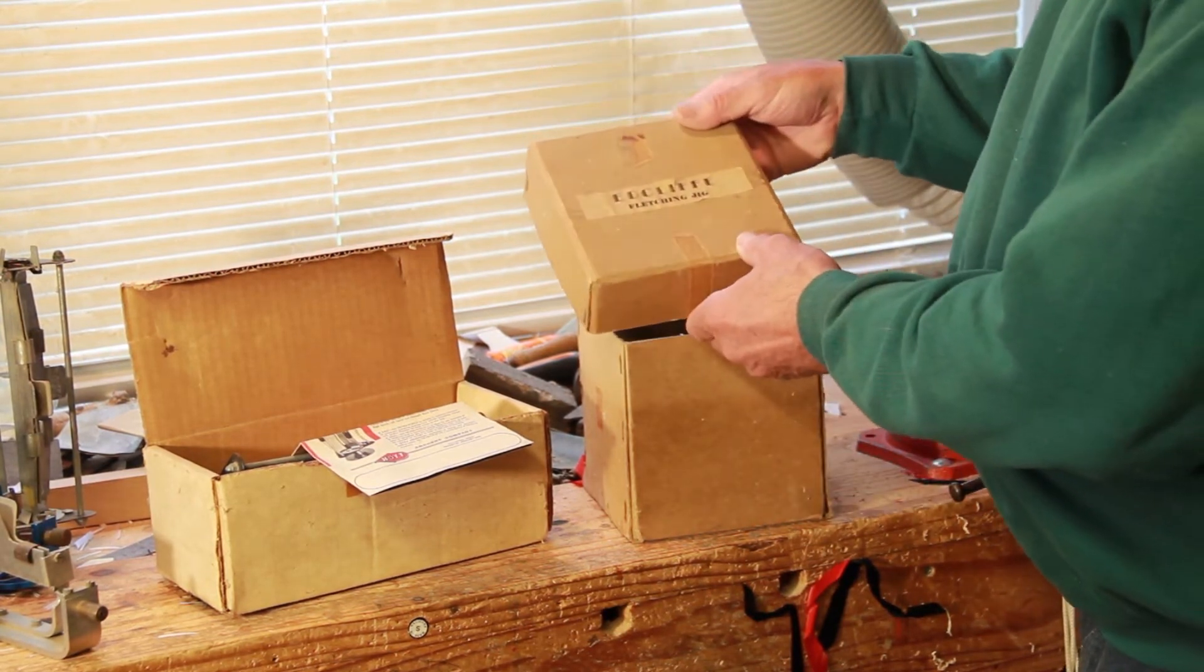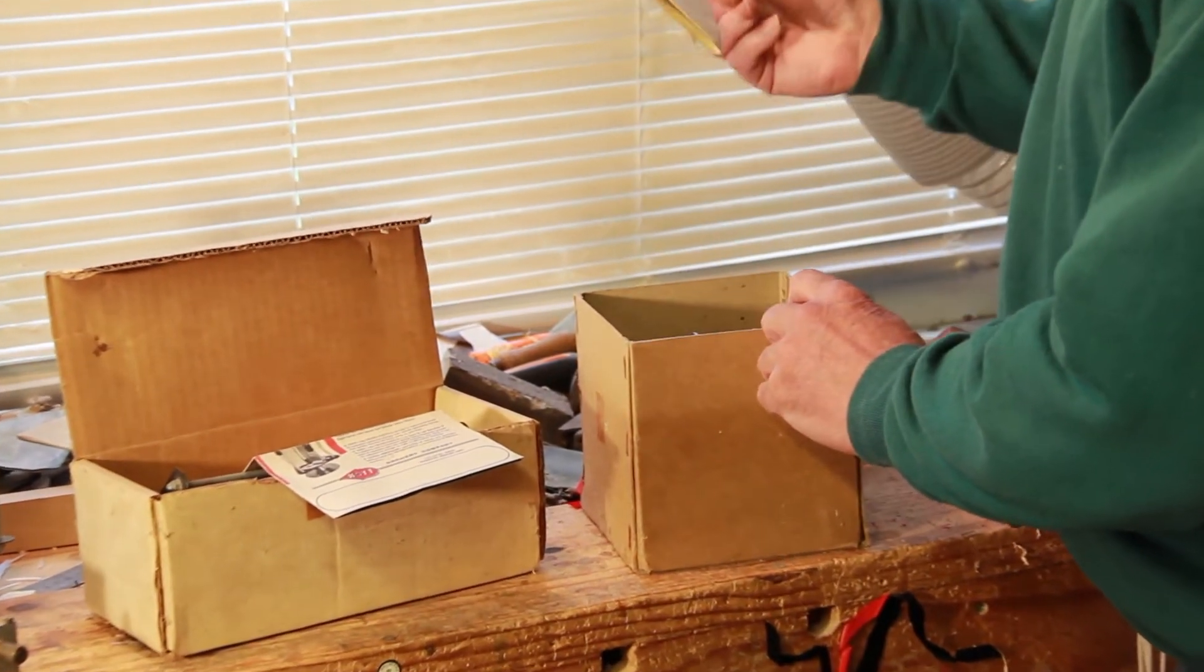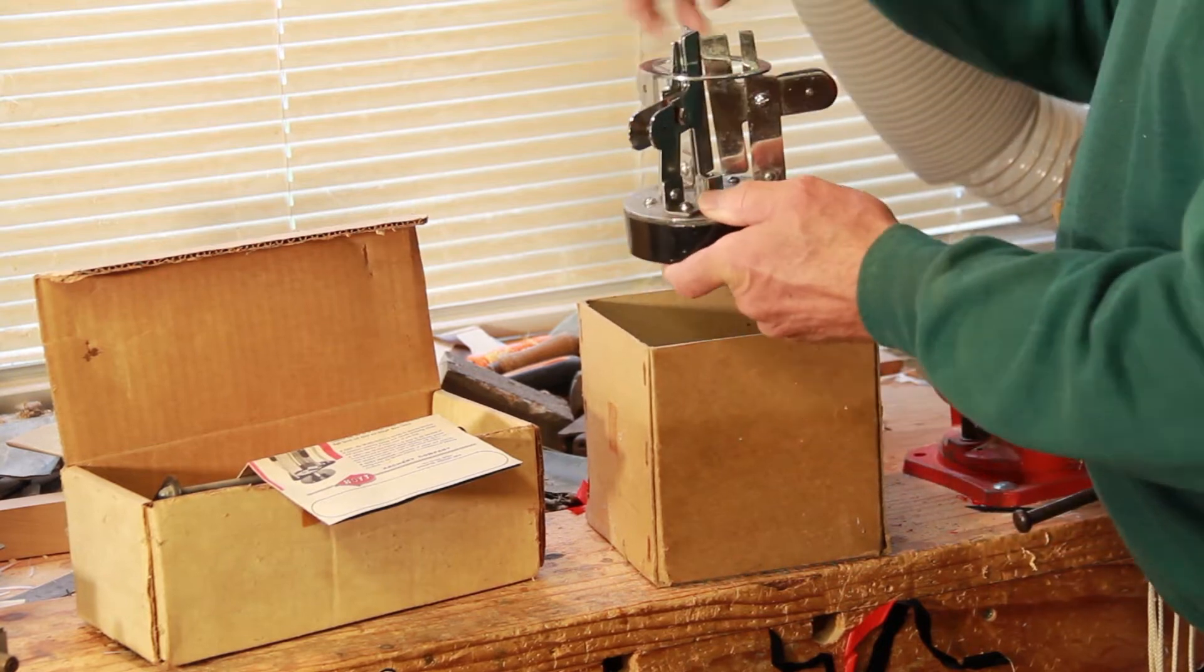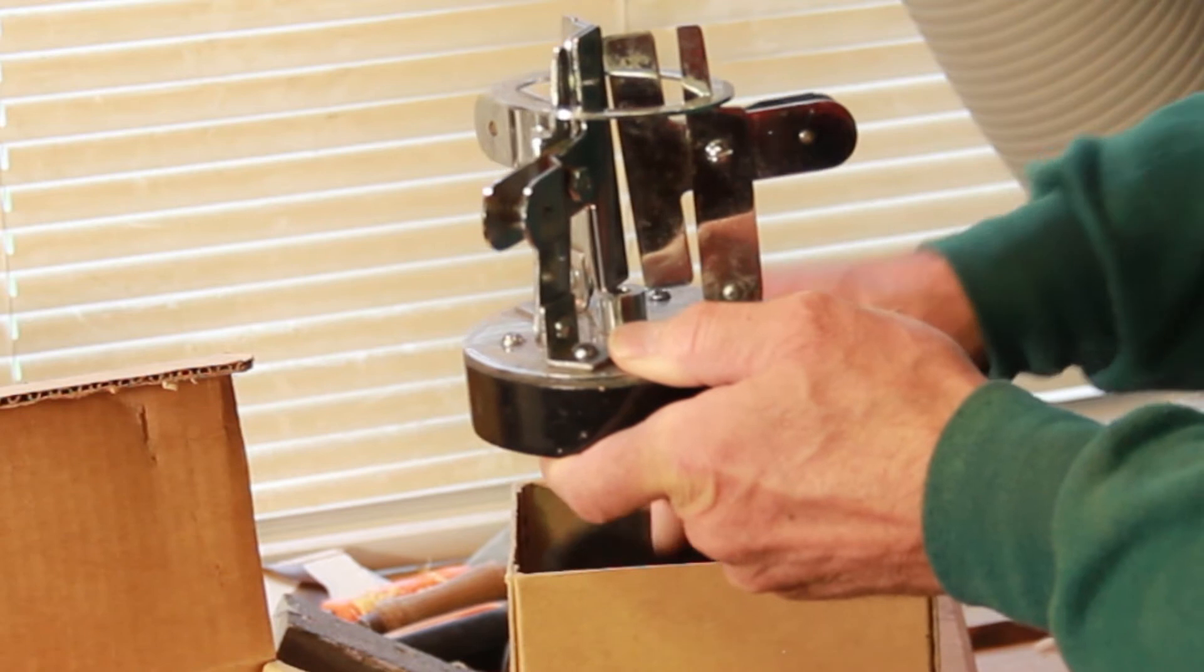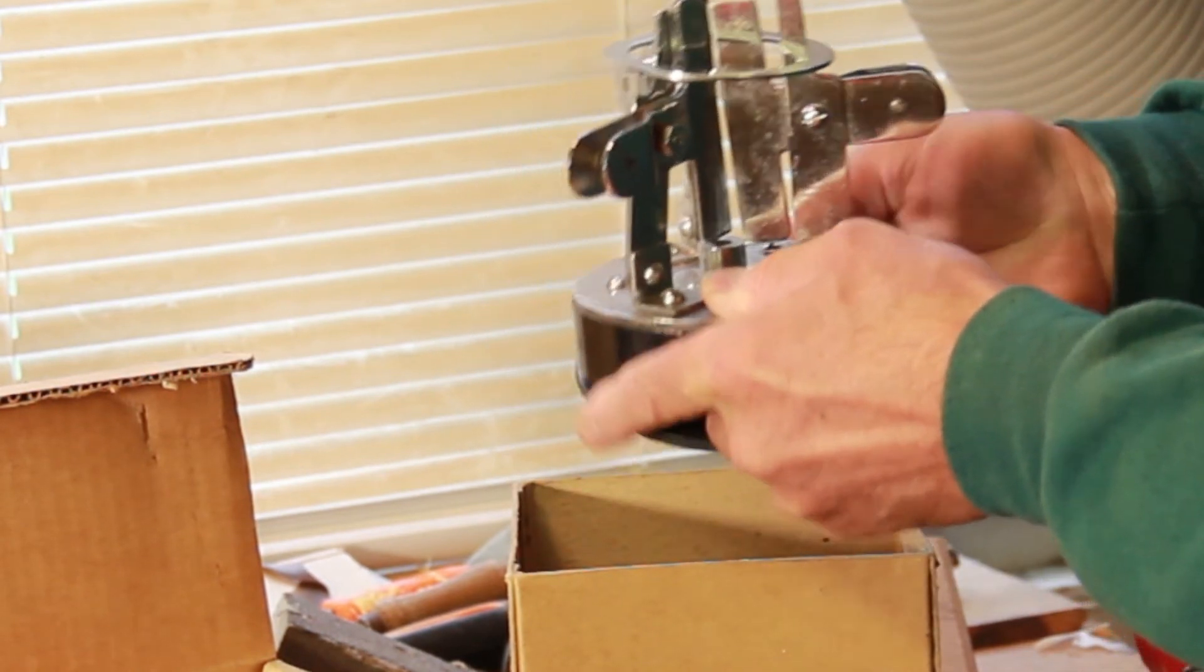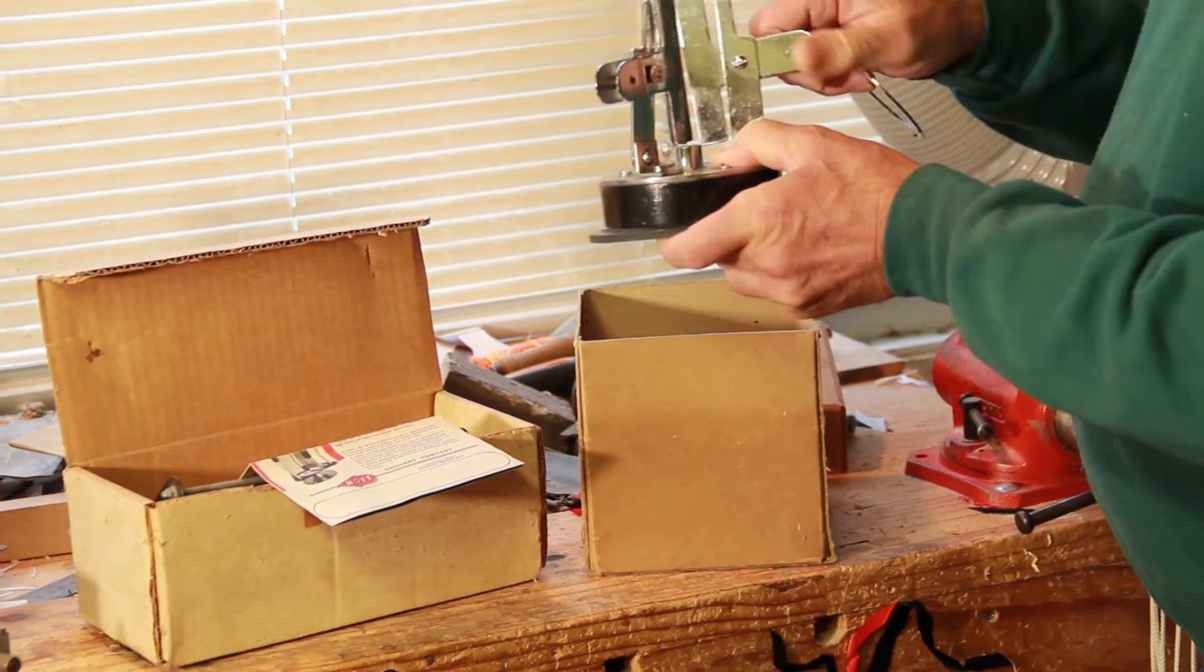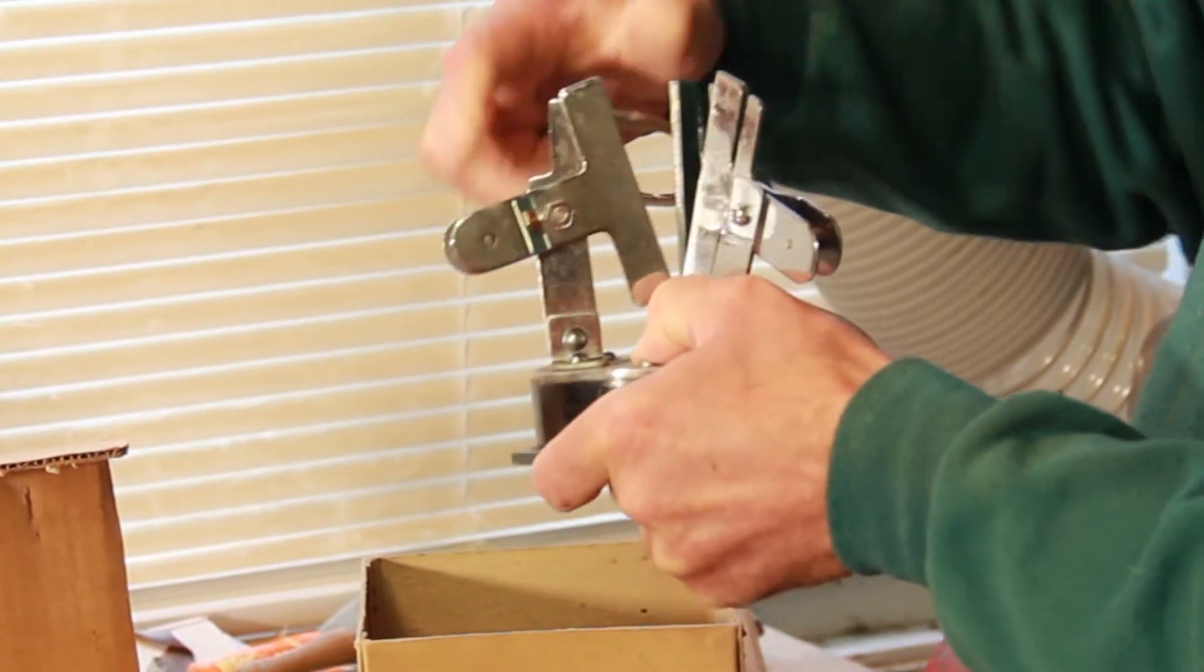The first one is an Edgecliff fletching jig and it's got some letter with it which I'll explain in a minute. This one is made out of metal which has got a nice finish to it and it does three fletches. Each of these clips are very stiff now.